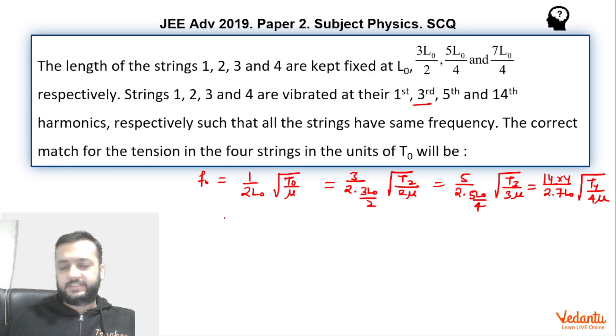In the first string tension is T0. Let's find the value of T2 in terms of T0. Let's do the easy calculations first. 3 and 3 will be cancelled, 2 and 2 will be cancelled. Here 5 and 5 will be cancelled and this makes it 2. Here 7 twos of 14 will be gone.